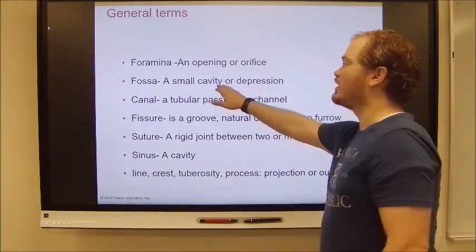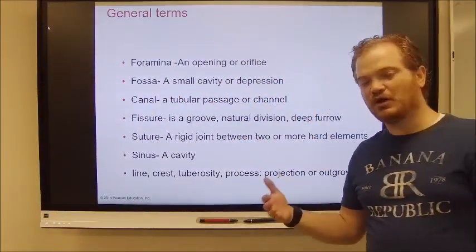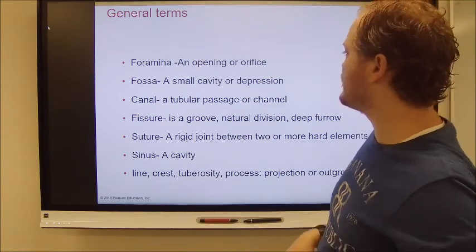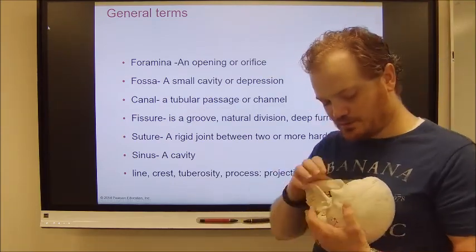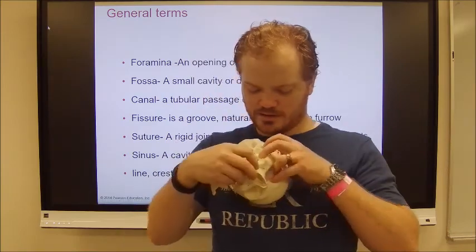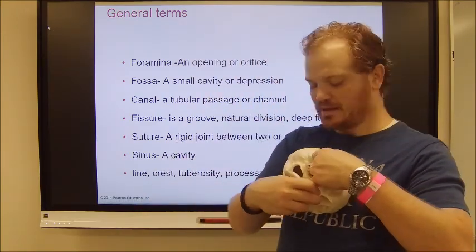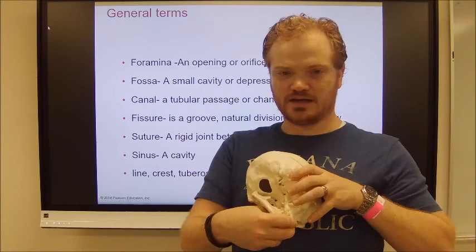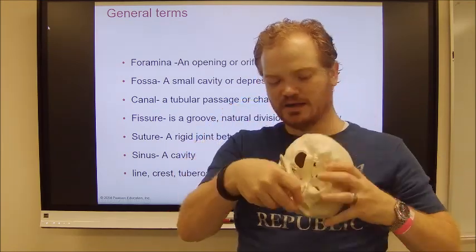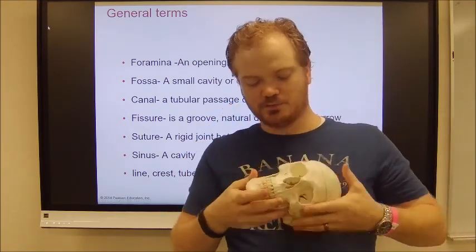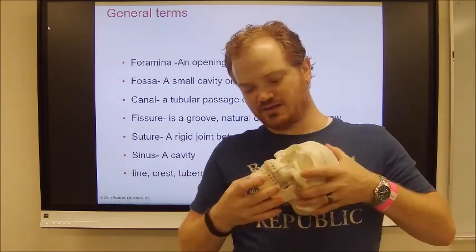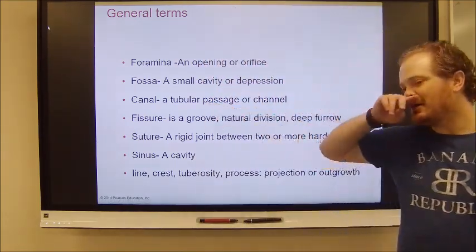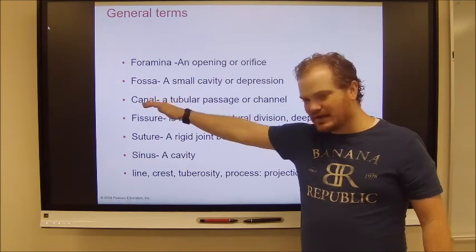Fossae are small indentations in bone, typically where other bones articulate. For example, if I pull my jaw out of the way, that is a mandibular fossa — an area where the mandible articulates. It's just a little indentation in the skull where the mandible fits so it can articulate.